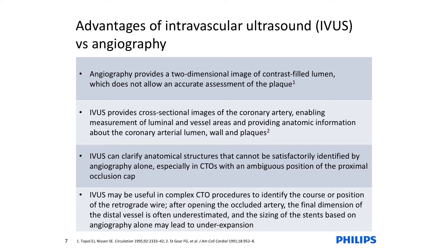Where does intravascular ultrasound come into play? The intervention is based on angiographic viewing; however, angiography is a two-dimensional image that only shows the contrast-filled lumen and doesn't always accurately allow assessment of the plaque. IVUS provides cross-sectional images, so we can discriminate between the luminal and plaque area and the whole vessel volume, and assess negative and positive remodeling. In the context of a chronically occluded artery, IVUS specifically allows us to understand the anatomical structures within the CTO, where we have no contrast filling at all, and understand where the wire position is relative to the anatomy — including both the antegrade and retrograde use of IVUS.